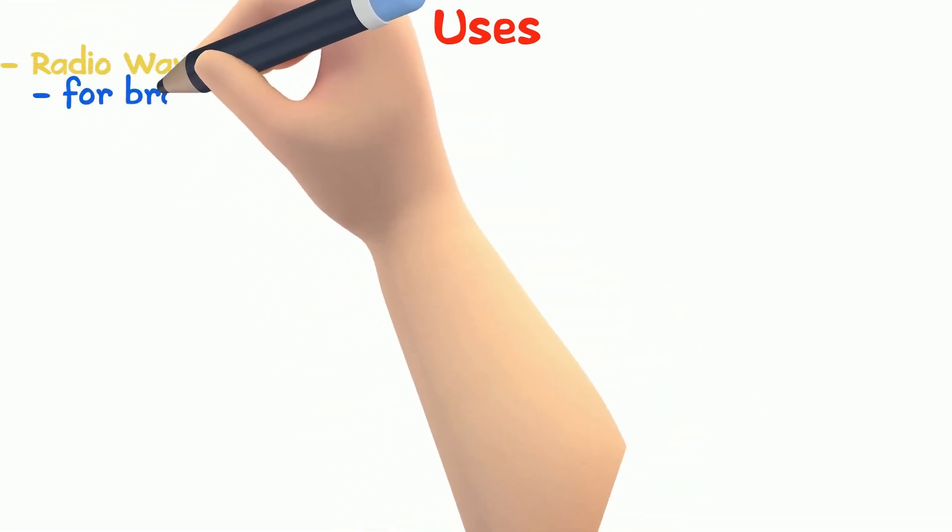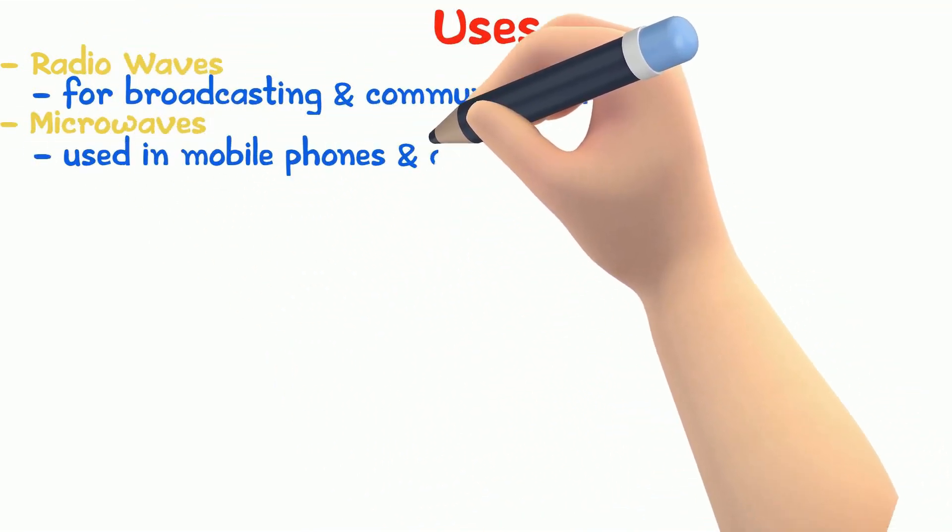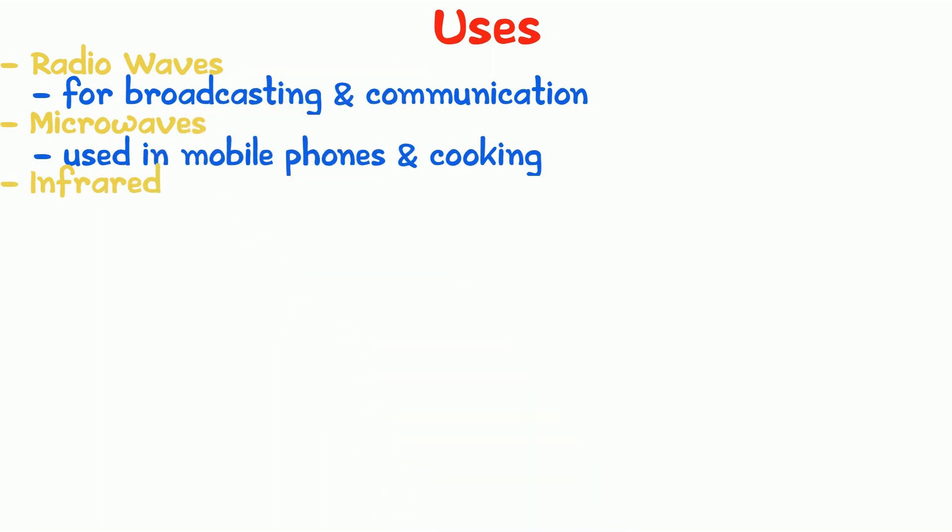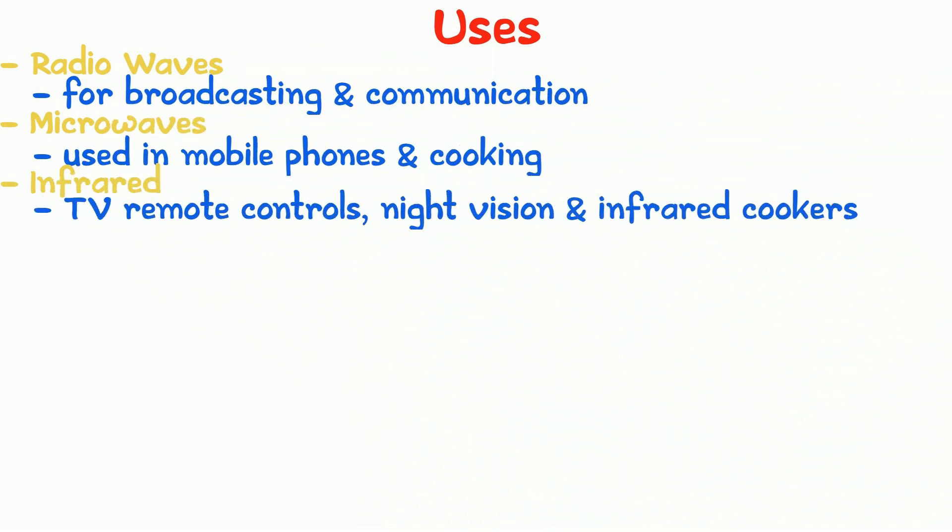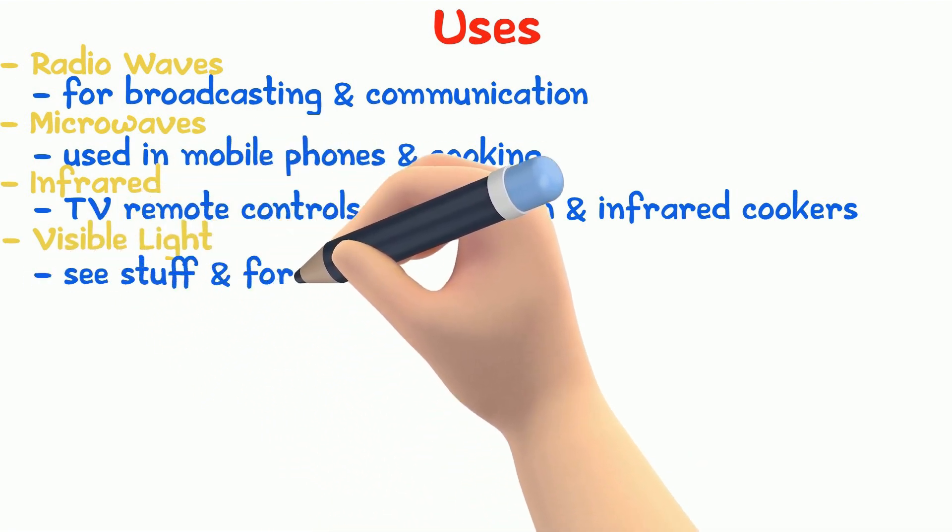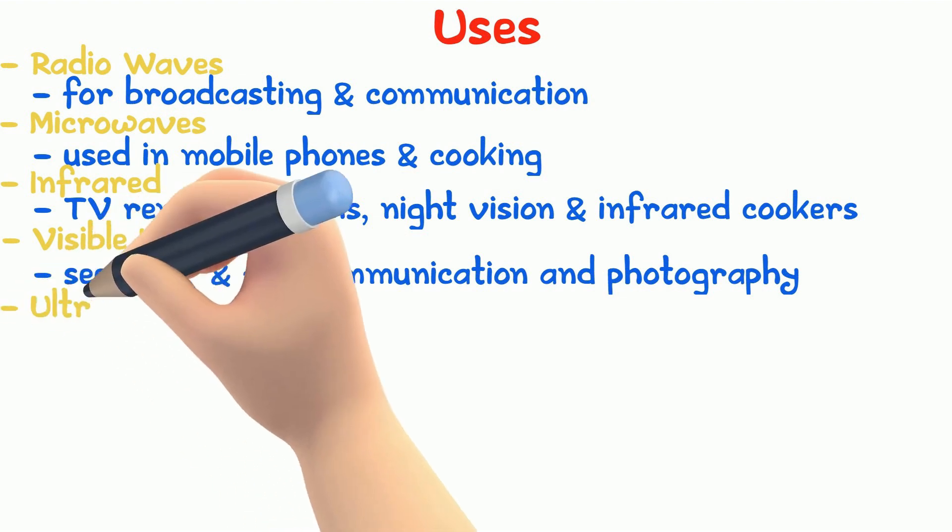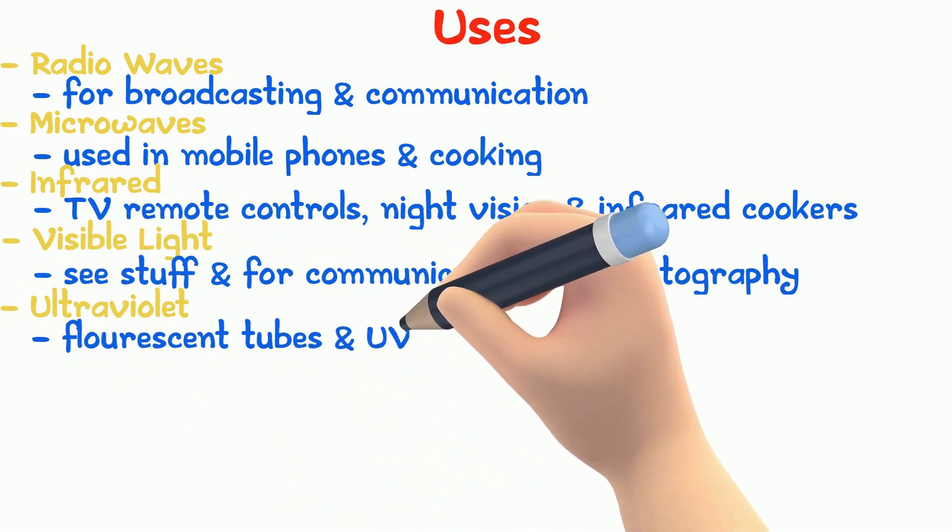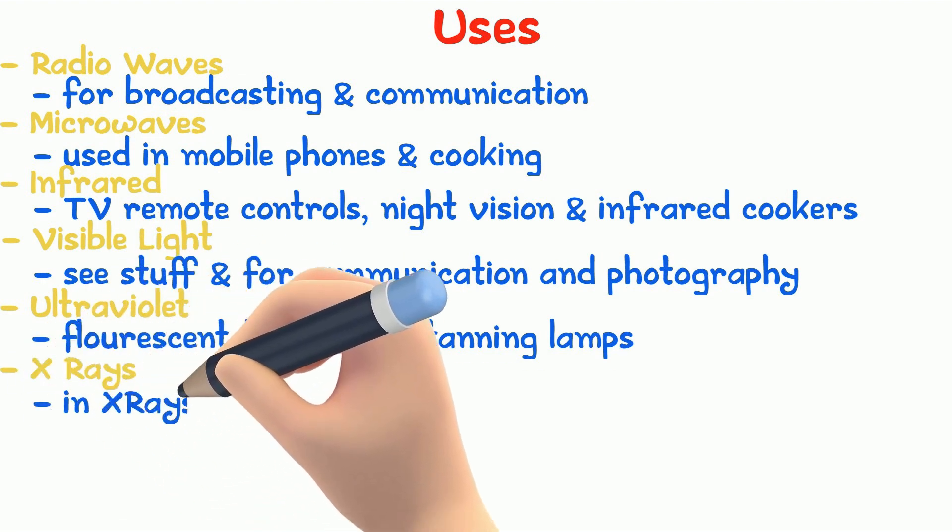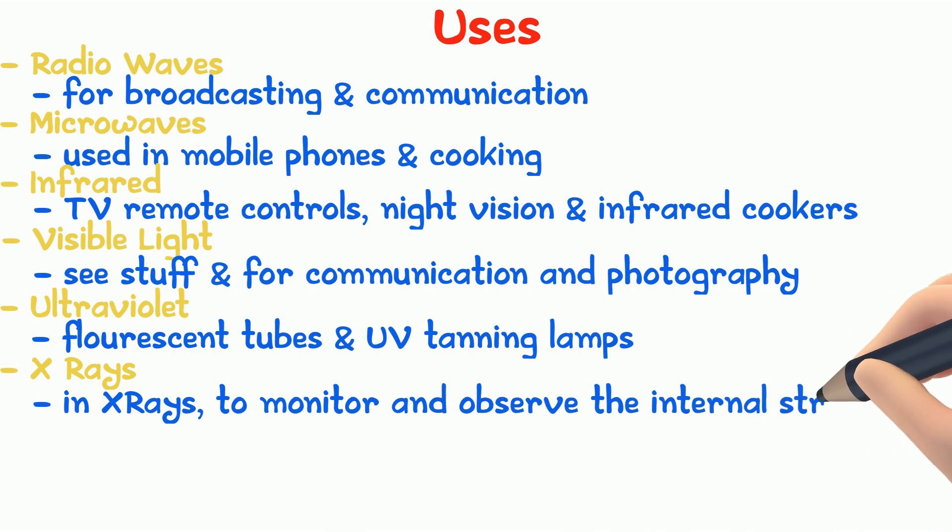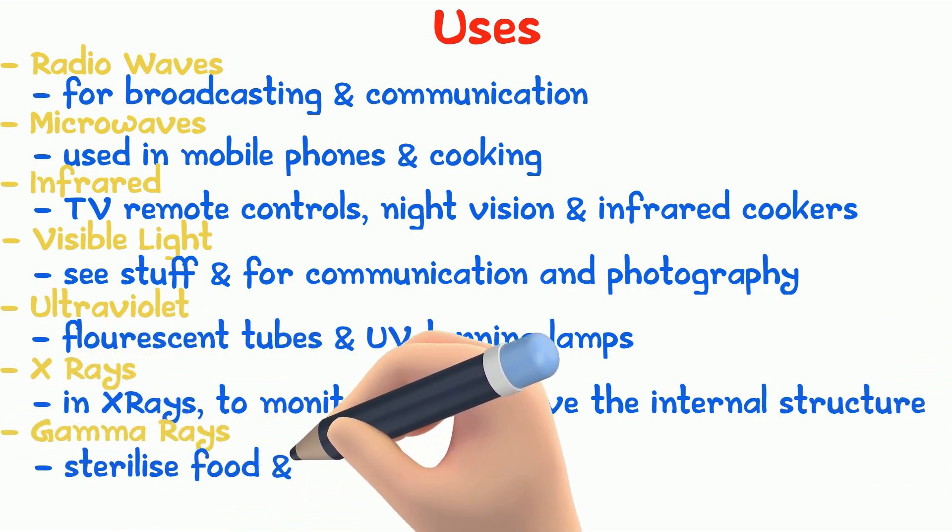Radio waves are used for broadcasting and communications. Microwaves are used in mobile phones and cooking. Infrared is used in some TV remote controls, night vision and infrared cookers. Visible light is what allows us to see stuff and is also used in communication and photography. Ultraviolet can be used in fluorescent tubes and UV tanning lamps. X-rays are used obviously in x-rays to monitor and observe the internal structure of objects. Gamma rays can be used to sterilize food and for medical equipment.